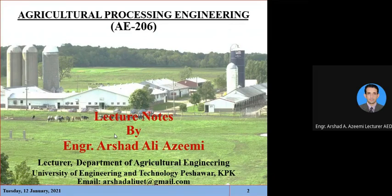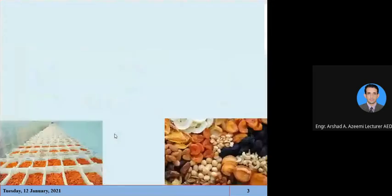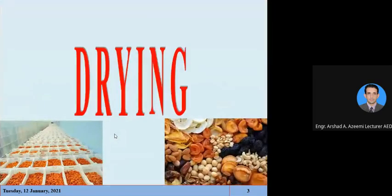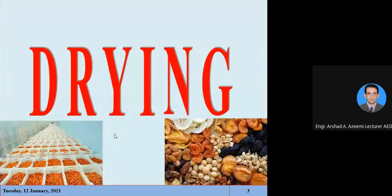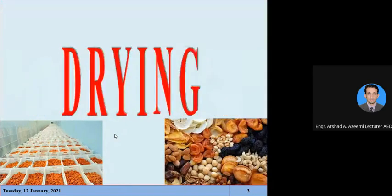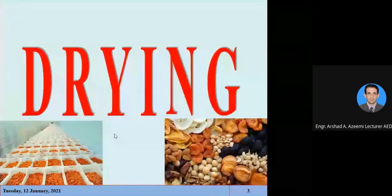That was our fourth chapter, which was discussed before the midterm. Now we will start our new chapter about the processing operation, which is drying of agricultural products.